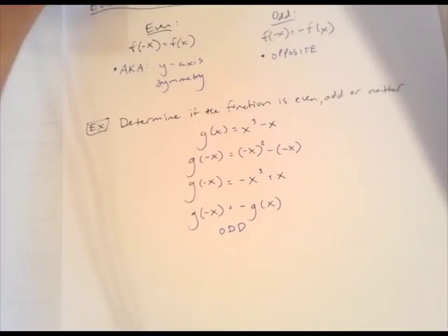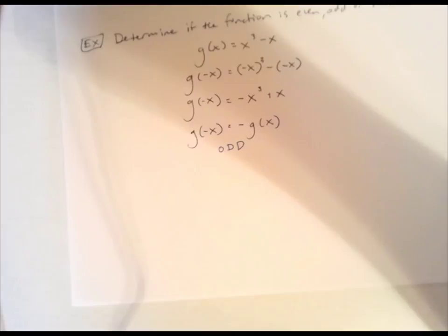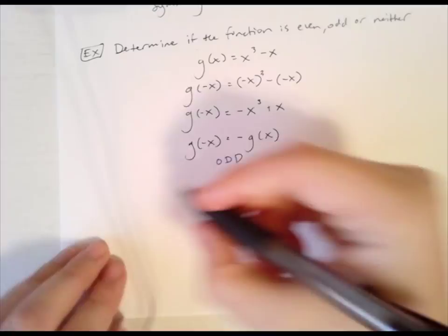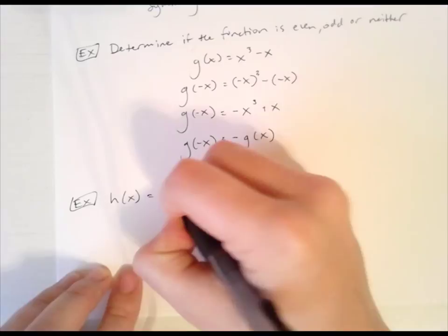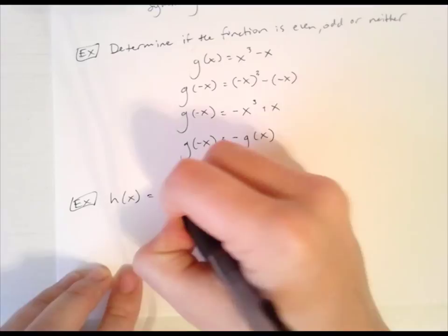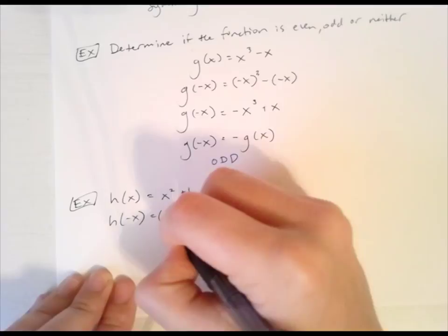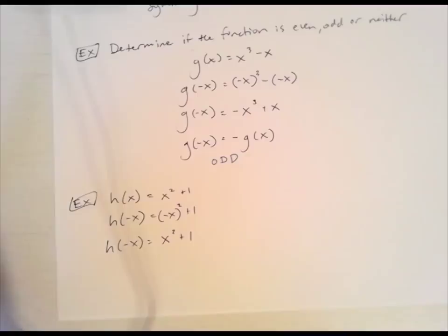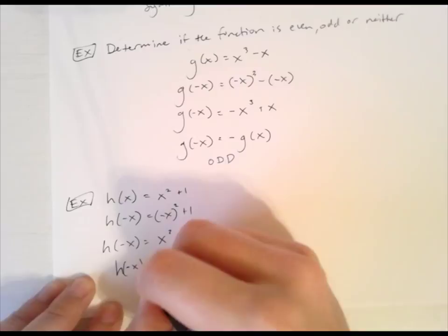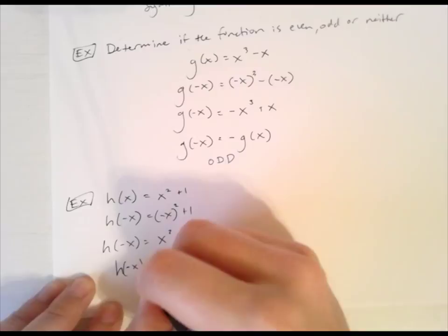For h(x) = x² + 1: substitute -x to get h(-x) = (-x)² + 1 = x² + 1. This is the same as the original function, so h(-x) = h(x), which means h(x) is an even function.